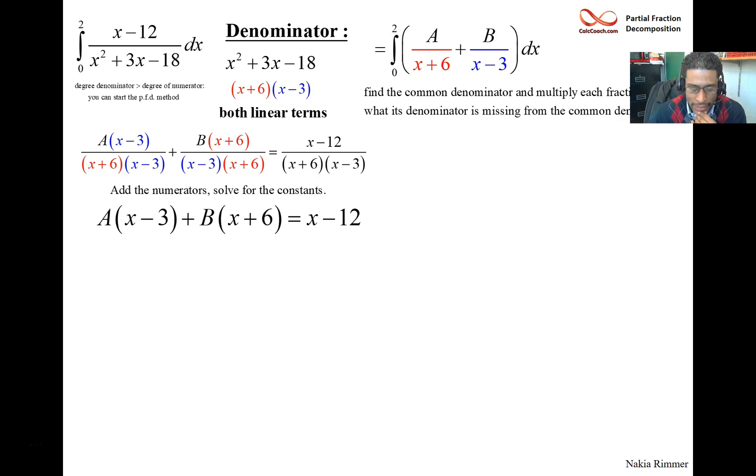This is true for all x, and so what we can do is pick the x value smartly. There's a very good choice of x that you can use that will eliminate one of the variables. So you want to choose x equals negative 6, and then next choose x equals 3, or any order.